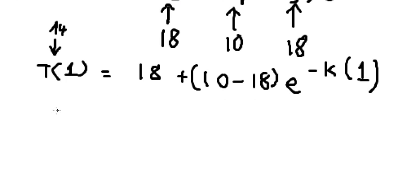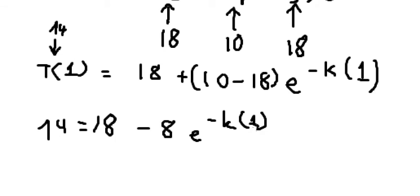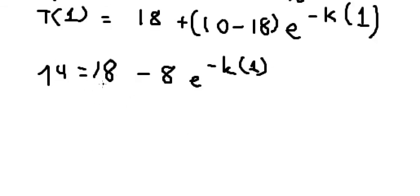So we simplify everything. 10 minus 18, we have negative 8. So number 18, we put on the left. We have 14 minus 18, we have negative 4.